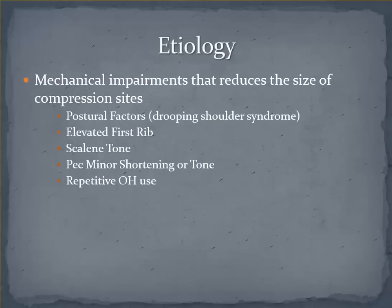There are a number of possible contributors to TOS symptomology, most of which are unrelated to anatomic anomalies. Essentially anything that reduces the space in the aforementioned sites can potentially lead to various symptoms associated with brachial plexus irritation or vascular compression. Postural factors — particularly the patient with drooping shoulders — can create excessive tension on the plexus or narrow the costoclavicular gap. Elevation of the first rib may be facilitated by scalene tone, which can create symptoms or may in itself cause entrapment more proximally, perhaps through a motor vehicle accident or some other mechanism.